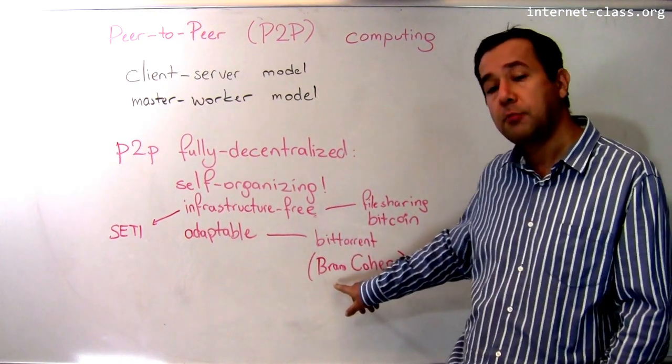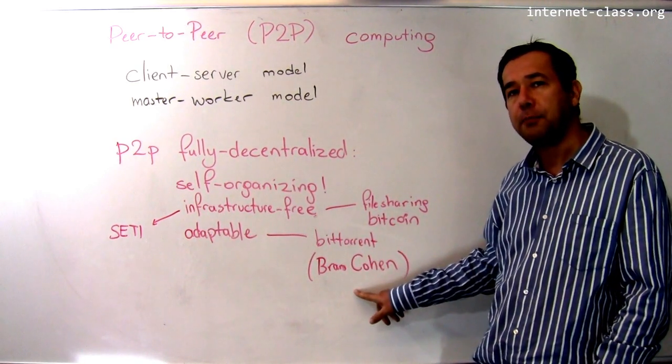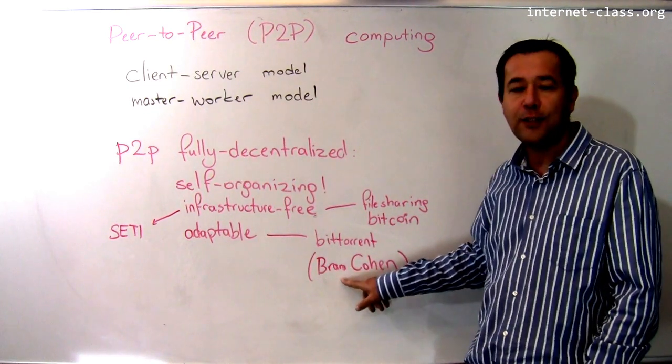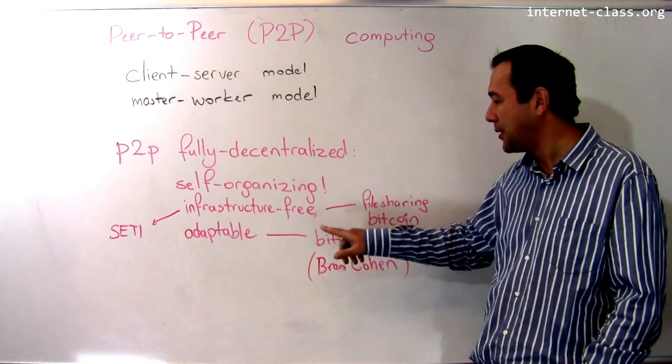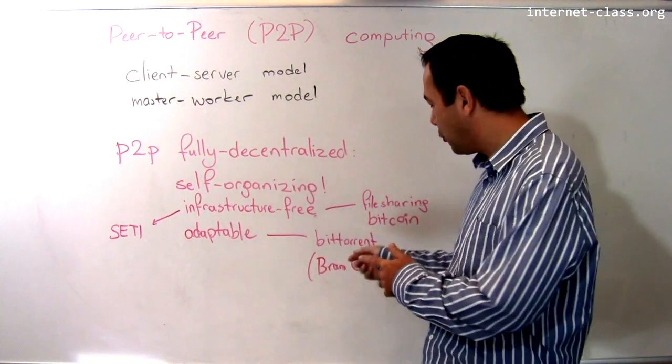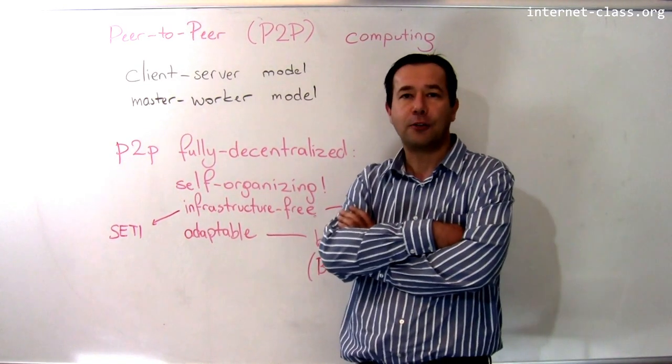BitTorrent was developed in 2000 by Bram Cohen. He was a dropout from our department in 1995, I guess. Don't get the wrong idea—don't drop out—but this is an example where a very cool peer-to-peer system has some connection to our department.